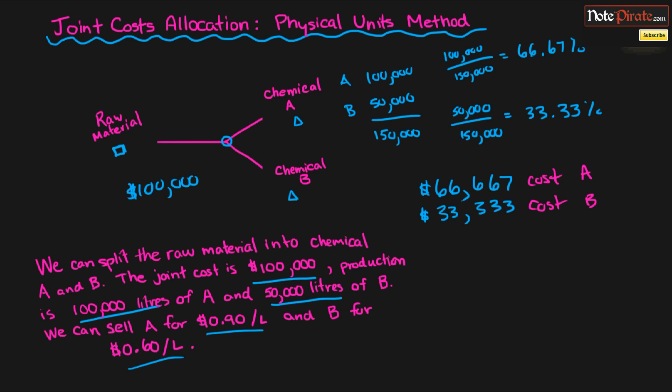Now if we actually look at how much they make, so let's get rid of this prorated stuff here at the top. Now let's say, we know that they make $0.90 a liter, and we made 100,000, so chemical A is going to yield $90,000 of revenue.